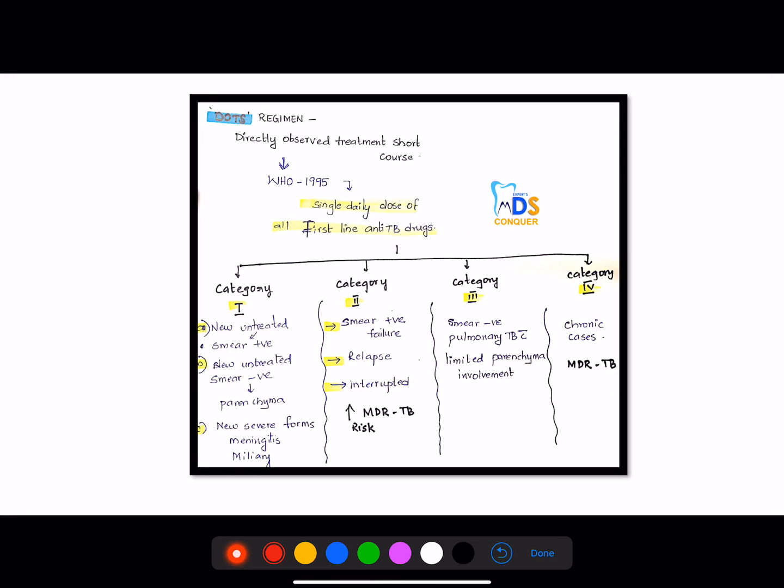So this is the treatment regimen for tuberculosis. There is a name called DOTS regimen, that is D-O-T-S. That means directly observed treatment short-course. This is for tuberculosis treatment which was given in 1995 by WHO. That means single daily dose of first-line anti-tubercular drugs are very effective. And again this treatment has been divided into four categories.